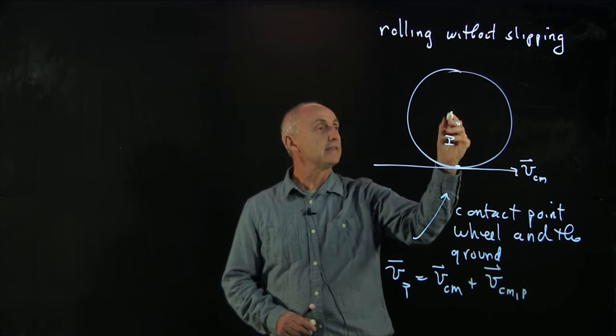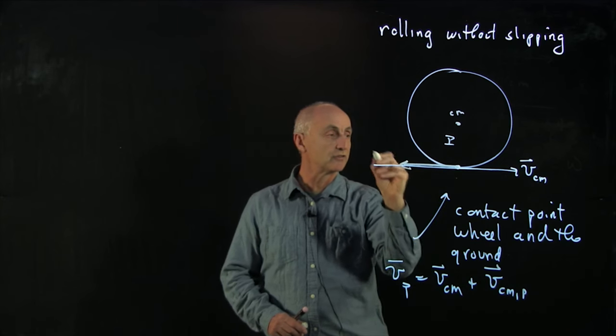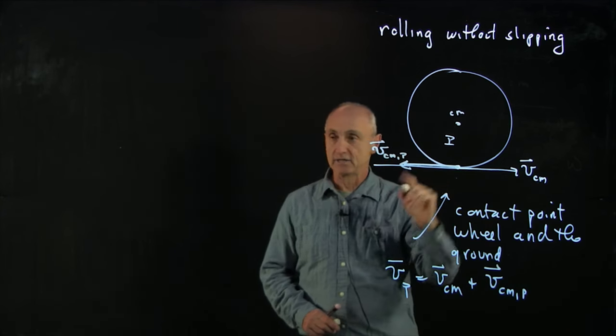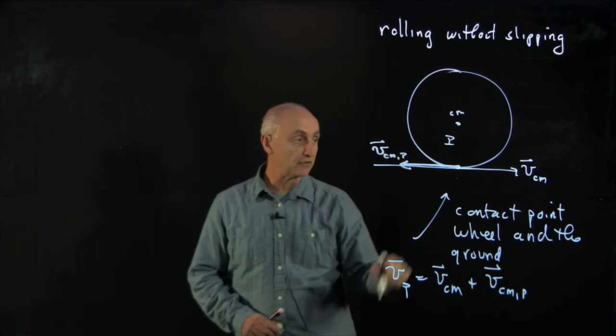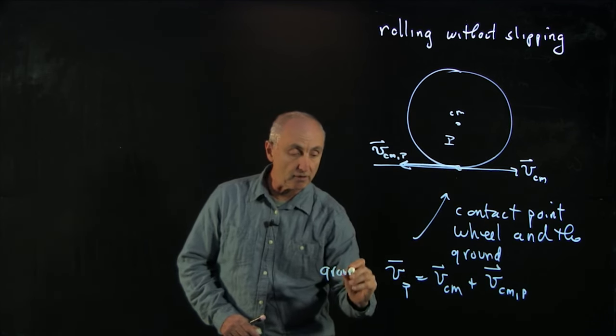And in that frame, every single point on the rim was just doing circular motion. And so that velocity is in the opposite direction. And the vector sum is the velocity of this point P as seen in the ground frame.